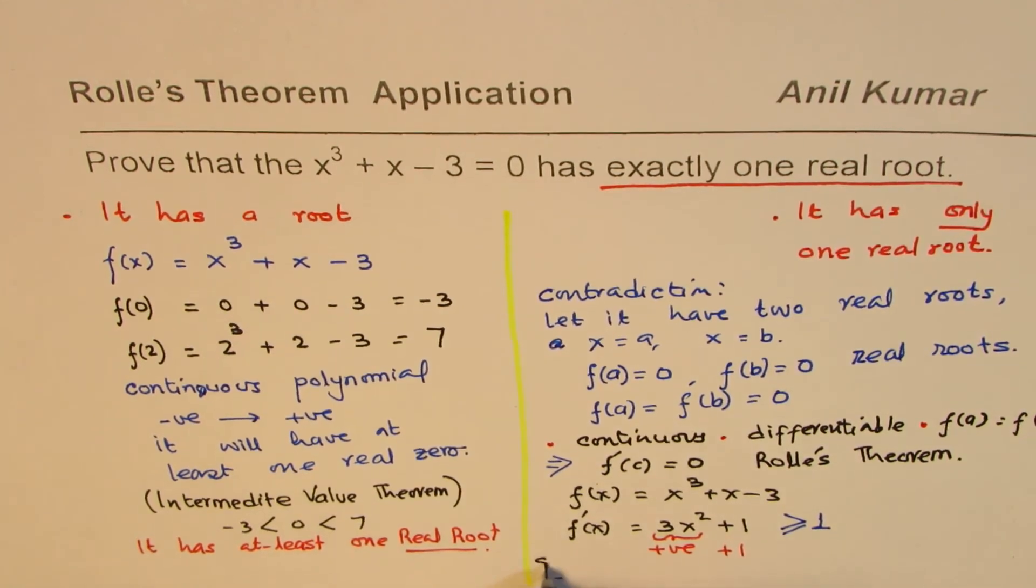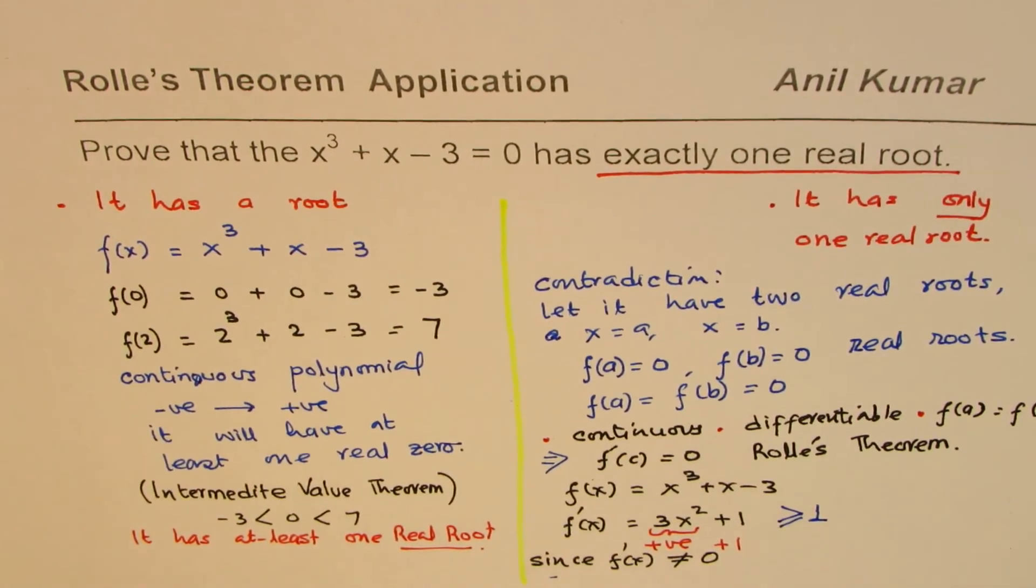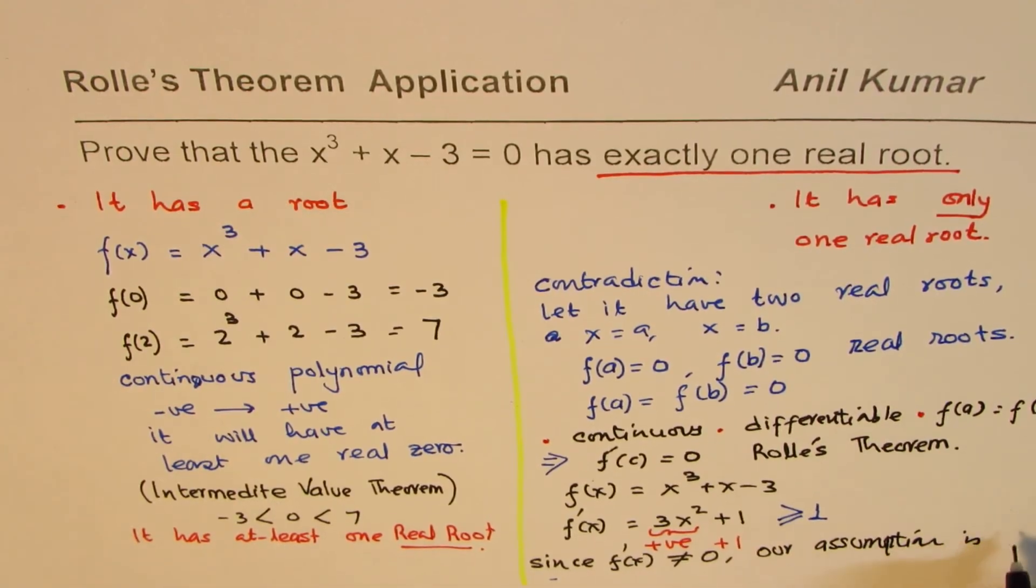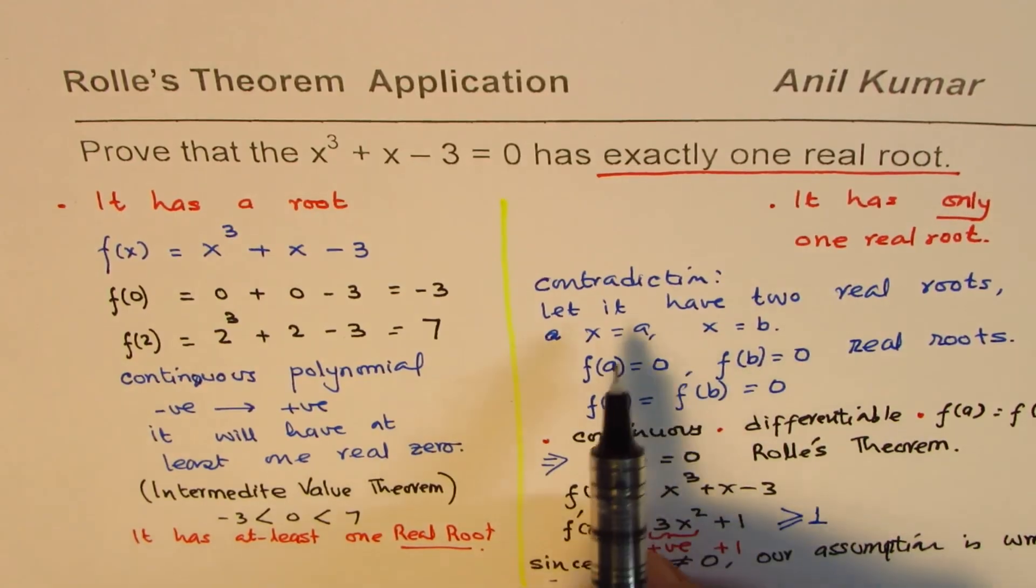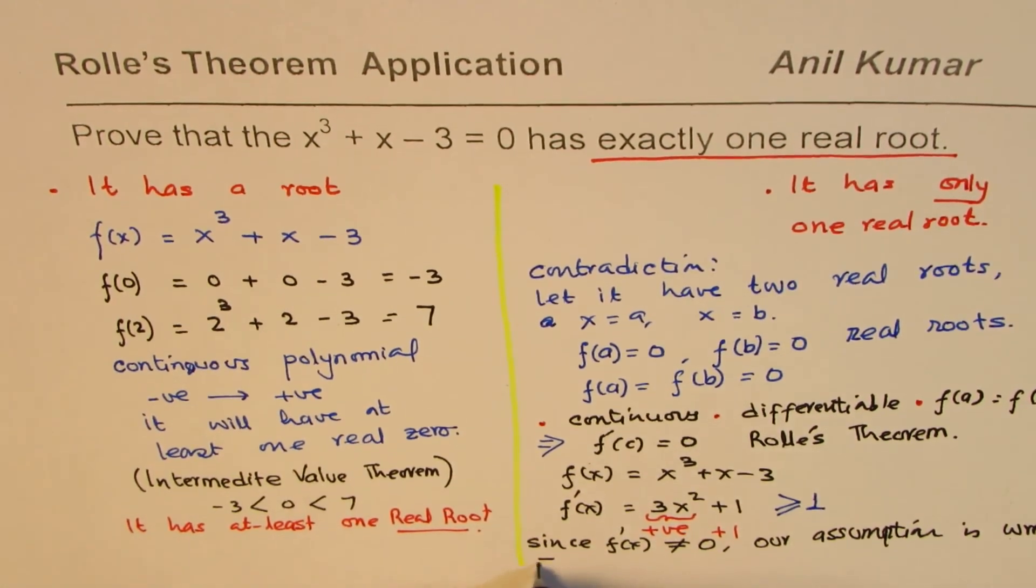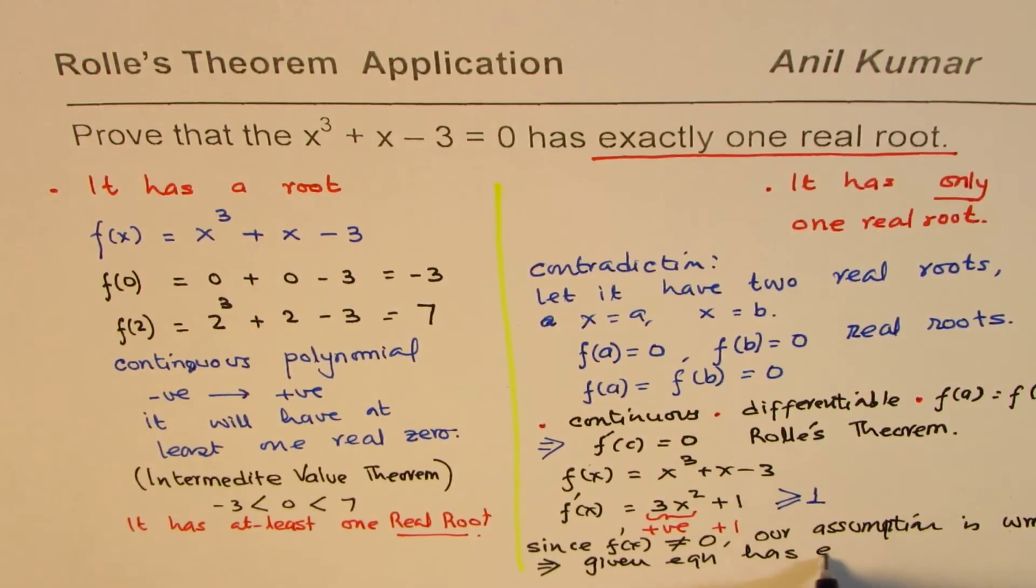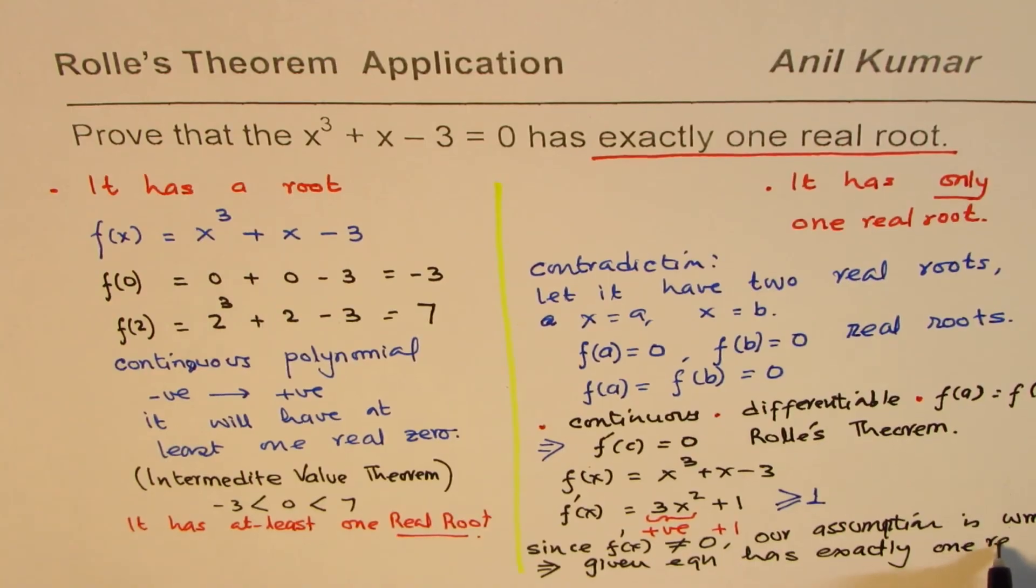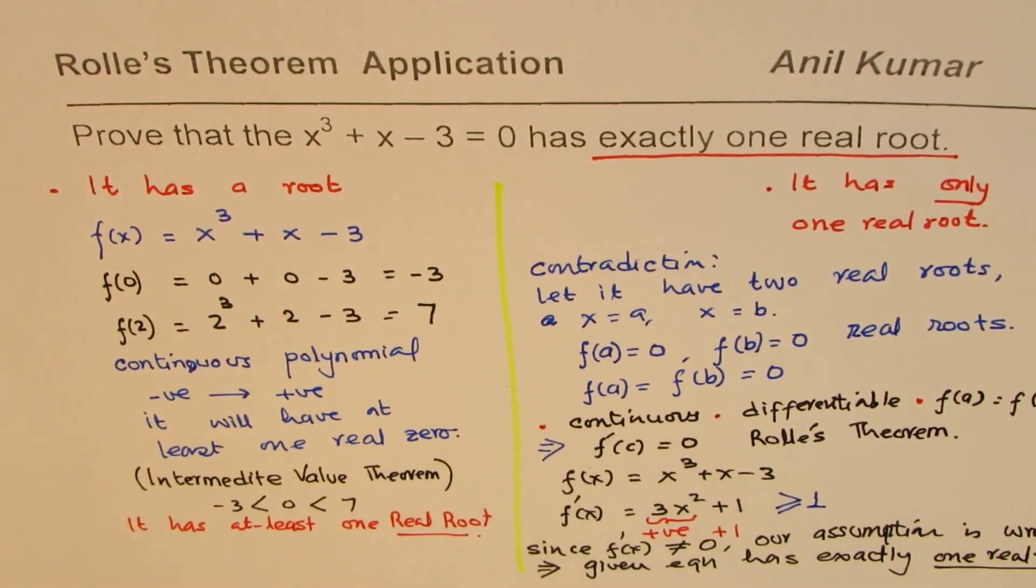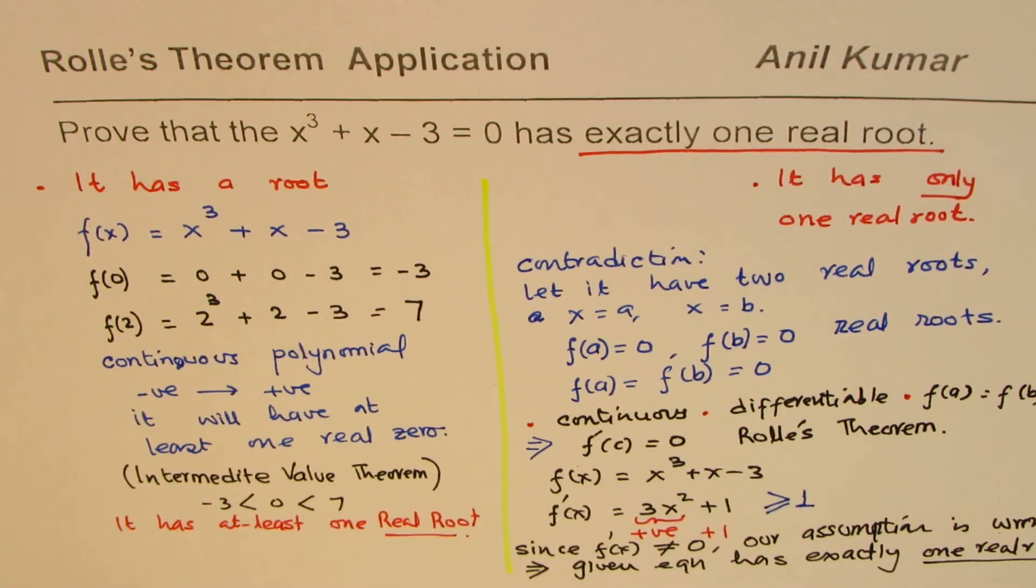Now, from here we can say, since the derivative is not equal to 0, our assumption is wrong. So the assumption is that it has two roots, which is wrong. So from contradiction, we can prove. So this implies that the given equation has exactly one real root. Because we know it has one root at least since it is going from a negative value to positive value. So like this, we can actually apply the Rolle's theorem and show that it has exactly one root.